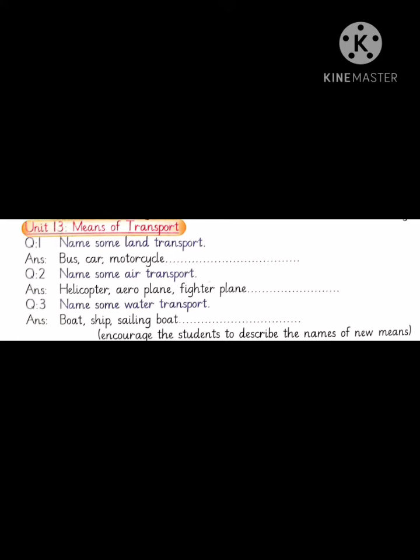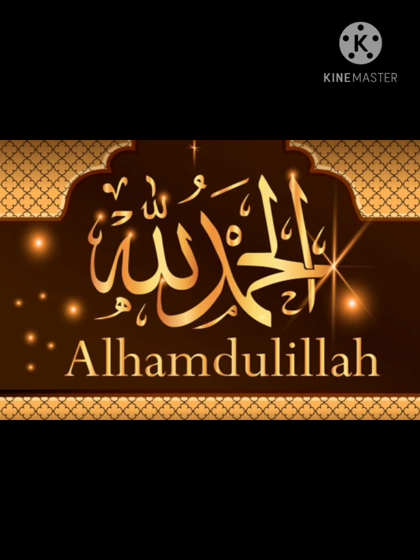Now question answers. Question number one: name some land transport — bus, car, motorcycle. Question number two: name some air transport — helicopter, aeroplane, fighter plane. Question number three: name some water transport — boat, ship, sailing boat.